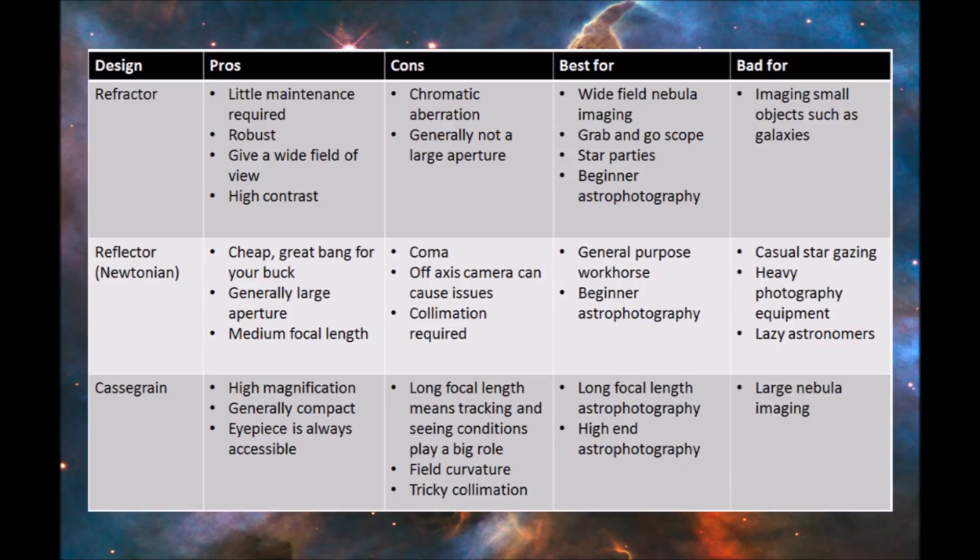Unfortunately there are some drawbacks. Some of the cheaper refractor telescopes tend to have a problem with what we call chromatic aberration. This is due to the fact that the different wavelengths of light focus at different positions, which means that when you're looking at bright objects in the sky, particularly the planets or the moon, it can have a purple halo around the edges, which is less than ideal, particularly if you're trying to do imaging.